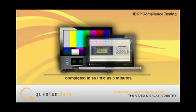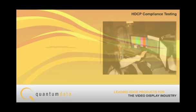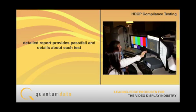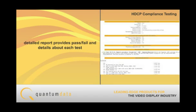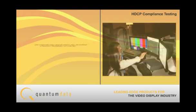When a test series has been completed, the 882E instrument issues a complete report that provides pass-fail results for each individual test and details about each distinct test. Reports can be viewed through a web browser, transferred over a network, or printed.